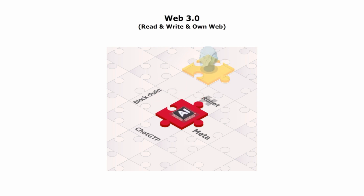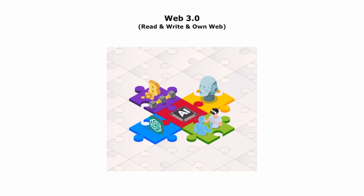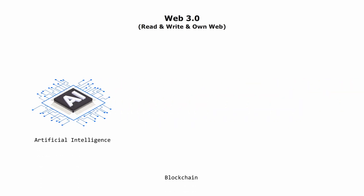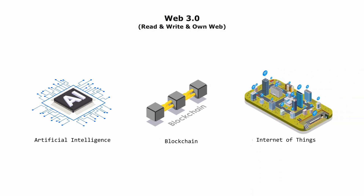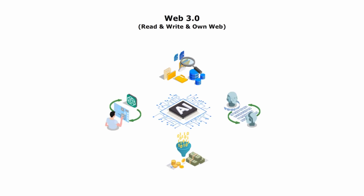Web 3.0 is the third generation of the World Wide Web. Web 3.0 is characterized by artificial intelligence, blockchain, and the Internet of Things. Web 3.0 will use AI techniques such as machine learning, deep learning, natural language processing, and large language models to analyze and interpret the meaning and context of online content. Web 3.0 is more intelligent and personalized, delivering tailored information and services to users' needs.